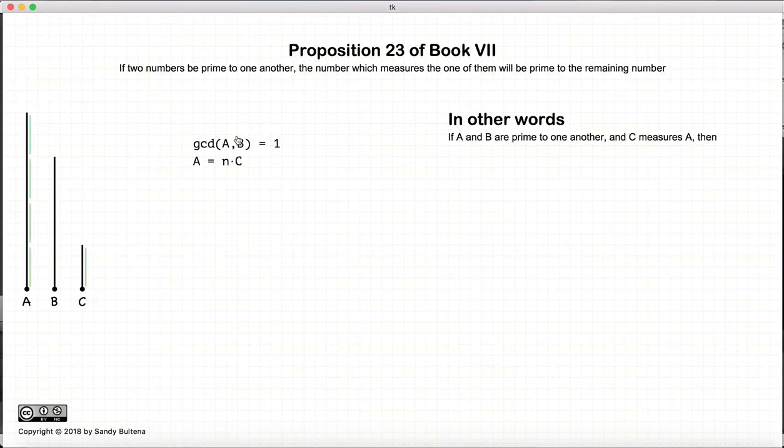Now in this proposition we have two numbers a and b which are relatively prime, and again that means the greatest common divisor of a and b is equal to 1. And there's another number c which measures a.